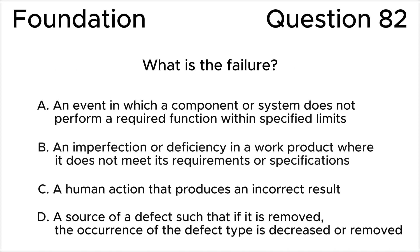C: A human action that produces an incorrect result. D: A source of a defect such that if it is removed, the occurrence of the defect type is decreased or removed.